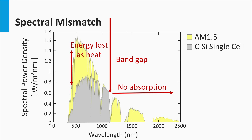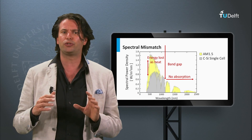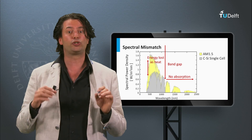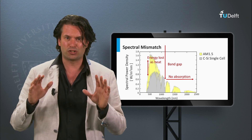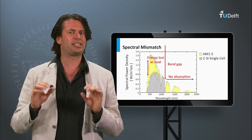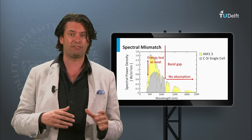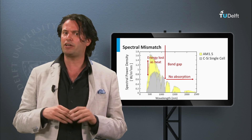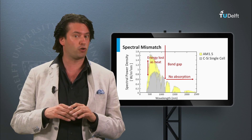However, this limit is not very realistic. In literature, people generally refer to the so-called Shockley-Queisser limit. This theoretical limit includes two additional loss mechanisms. First, as the solar cell is at a certain temperature, it will act as a black body radiator itself and emit light in the far infrared. This energy loss is roughly around 7% of the incident energy of the AM1.5 solar spectrum.